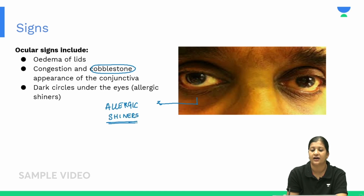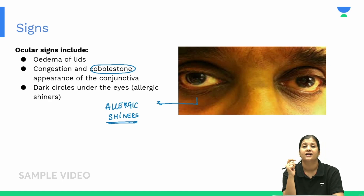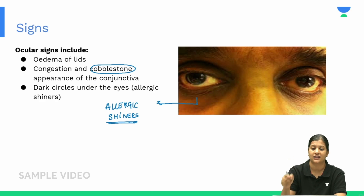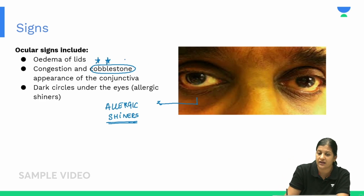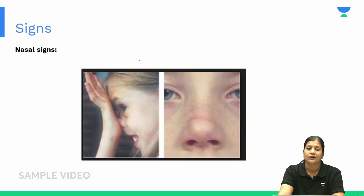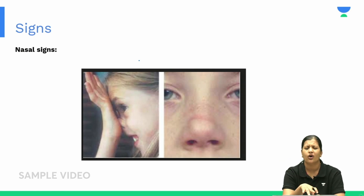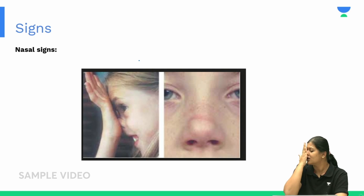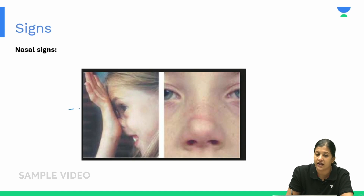Allergic shiners are dark circles below the eye — a sign specific to allergy. The cobblestone appearance of the conjunctiva and allergic shiners are important MCQ topics. Regarding nasal signs, due to constant watery discharge, patients habitually rub their nose upward, resembling a salute — this is called the salute sign.